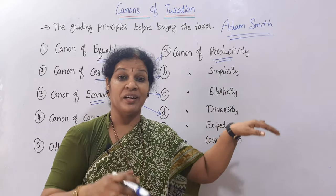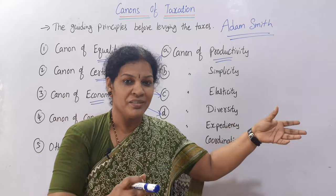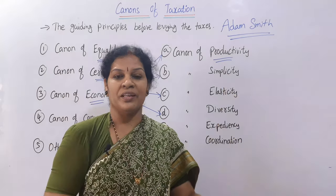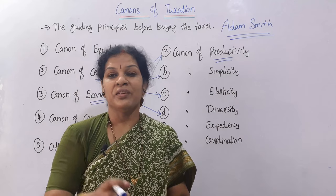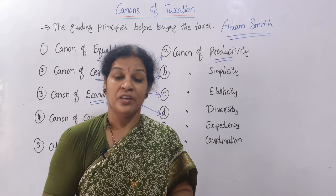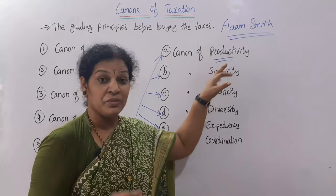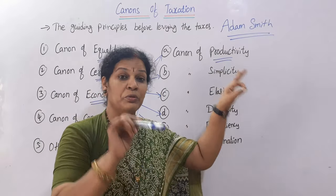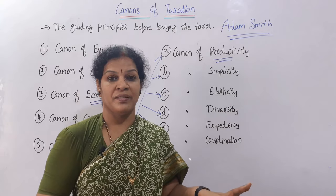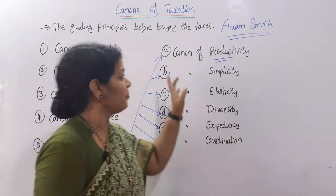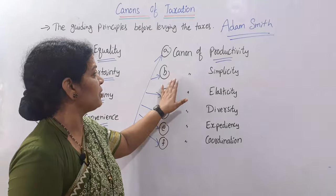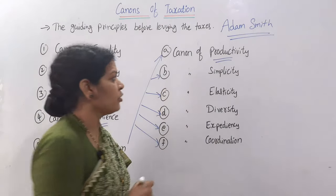Simply collecting a lot of tax and not utilizing it, misusing it, or being unable to use it doesn't give much utility. The canon of productivity says that when you collect tax, it should be used properly for the proper purpose — otherwise there is no use. The next canon is the canon of simplicity.